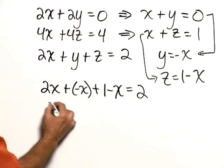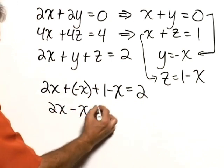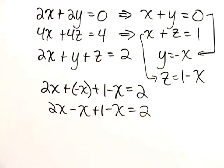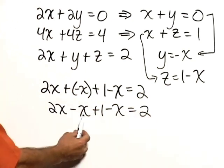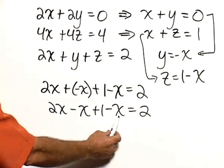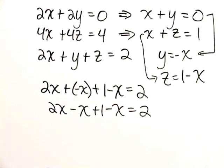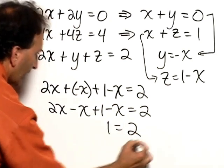Now I have 2x minus x plus 1 minus x equals 2. 2x minus x is 1x minus another x is no x. Look what happens. We have 1 equals 2.